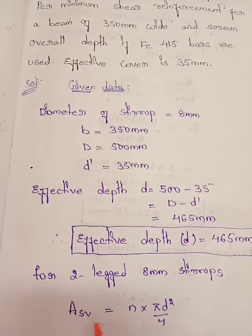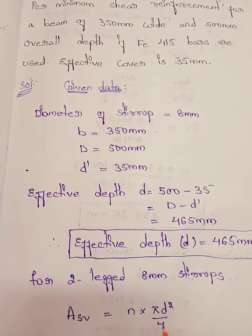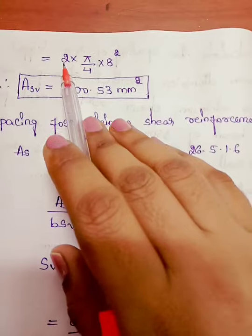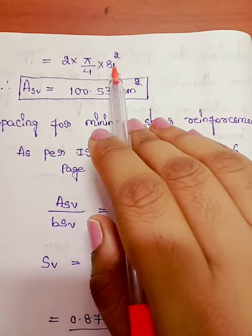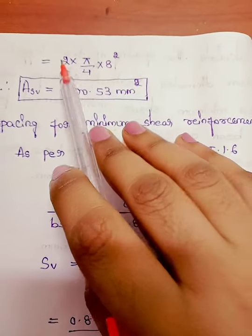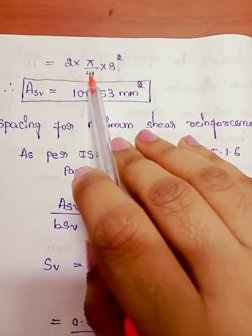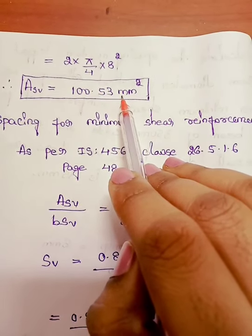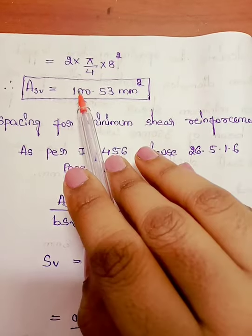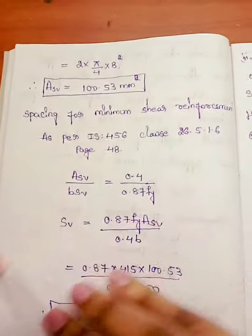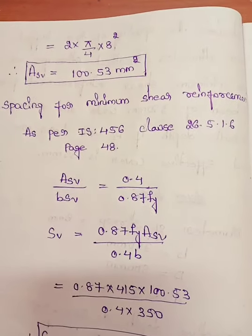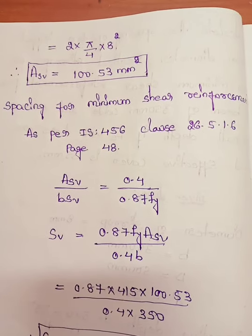For two-legged 8 mm stirrups, Asv = 2 × (π/4) × 8² = 100.53 mm². So Asv is equal to 100.53 mm².